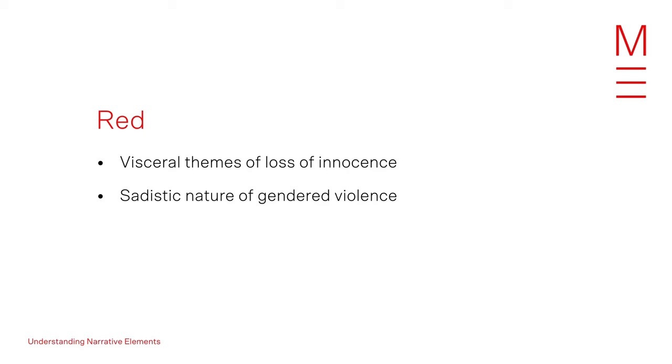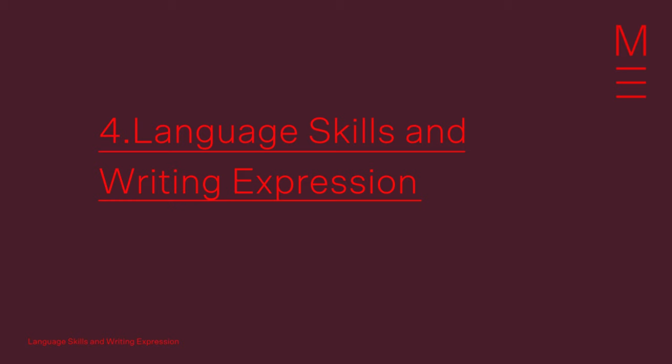Angela Carter's version of Bluebeard goes much the same way except that it's actually her mother who comes with a rifle to rescue her at the end. The story is entitled 'The Bloody Chamber' and the recurring motif of the color red, alongside constant mentions of blood, speaks to the visceral themes of the loss of innocence coupled with the sadistic nature of gendered violence. Even though quite stark, the figurative bombardment of sanguine red — in the colors the protagonist wears, in the flush of her cheeks, and in the eponymous bloody chamber itself — carries this powerful underlying message.